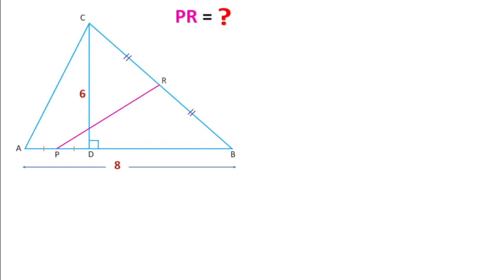Welcome to Definite Mind. In this question, there is a triangle ABC where the length of AB is 8 units and the length of CD is 6 units. P is the midpoint of AD and R is the midpoint of BC. We need to find the length of PR.